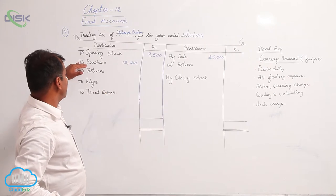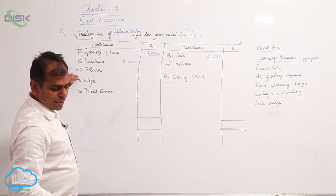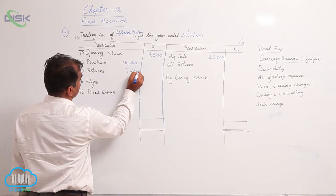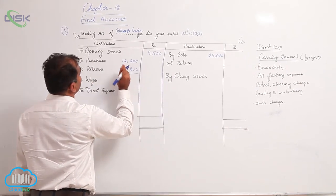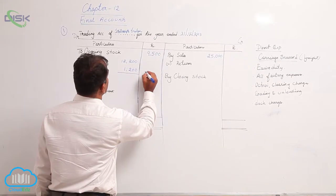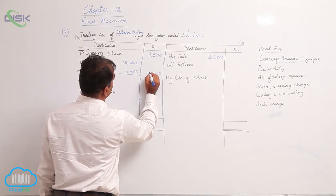Now next after sales you are given purchase return, so we have purchases minus returns. So this purchase returns of 1,200 I am writing against returns which is nothing but purchase returns. So when I remove 1,200 from 12,200 the amount becomes 11,000. This is how you show in the outer column.